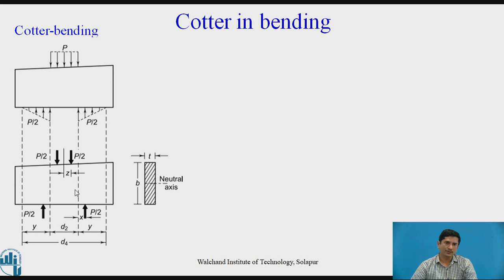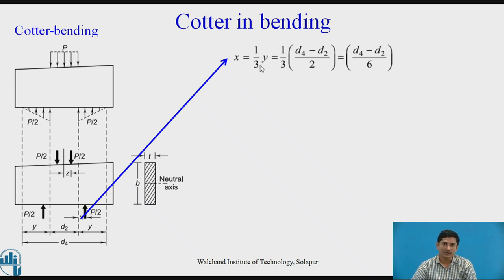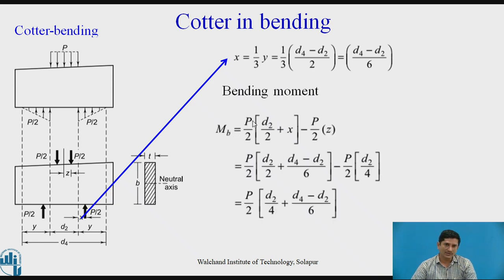Final failure is cotter in bending. Where this cotter is considered as a beam. This is the central line, vertical line. Force P/2 is acting at a distance Z. Resisting force P/2 is acting at a distance - this is D2. Therefore, from center it is D2/2 plus this x distance. We need to calculate these two distances. For this distribution, triangular distribution, the force is acting at one third of the distance y. Therefore, it is one third of (D4 - D2)/2 which is (D4 - D2)/6. The bending moment is given by bending moment equals P/2, the force P/2 which is acting at distance x + D2/2, minus P/2 multiplied by Z.